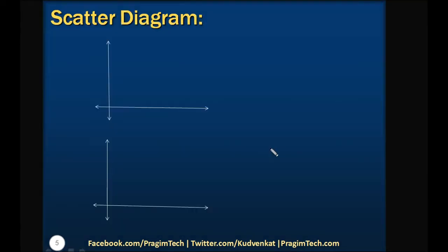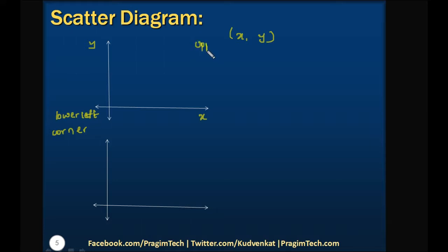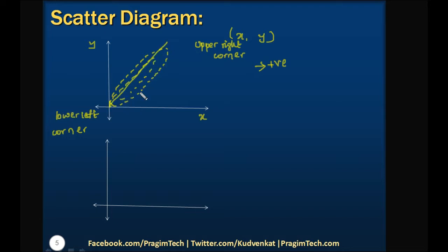Let us understand how we can find out correlation between variables using a scatter diagram. X and Y variables are represented by data points in the XY plane, where each point represents a pair (X, Y). After locating all the points, if the plotted graph extends from the lower left corner to the upper right corner, then it is called a positive correlation. If the plotted points form a straight line passing through the origin, then it is called a perfect positive correlation.